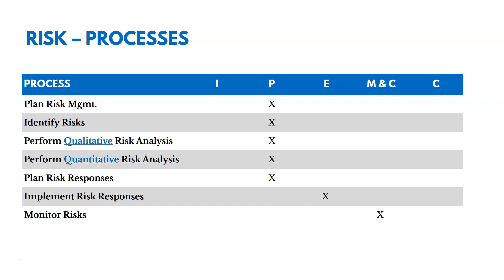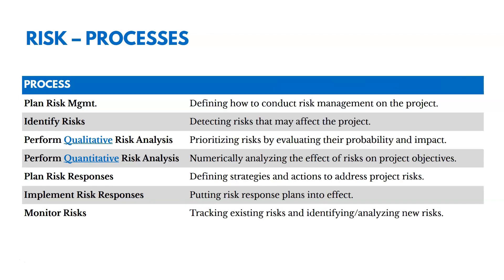There are seven processes in this chapter. Five are in planning, one's in executing, and one's in monitoring and controlling. With plan risk management, we're defining how we're going to conduct risk management on the project — for example, how we're going to identify risks, who we're going to speak with, and how we're going to budget for or mitigate risks.